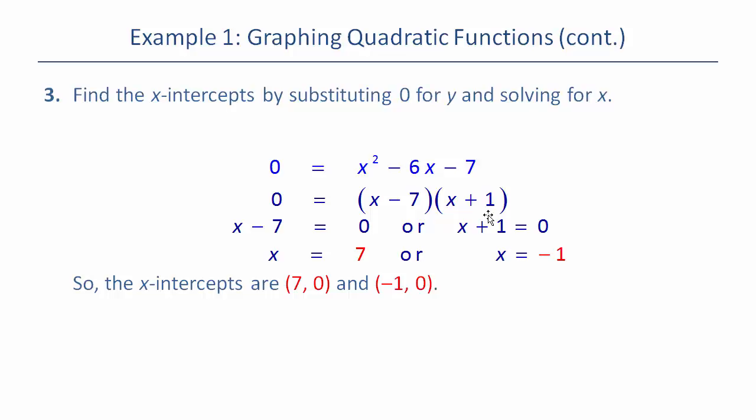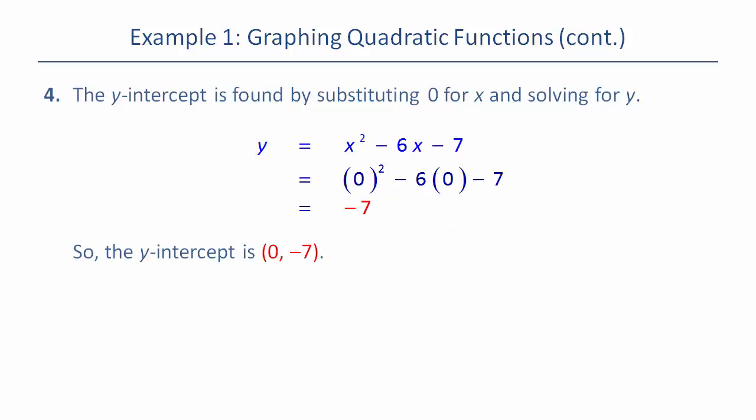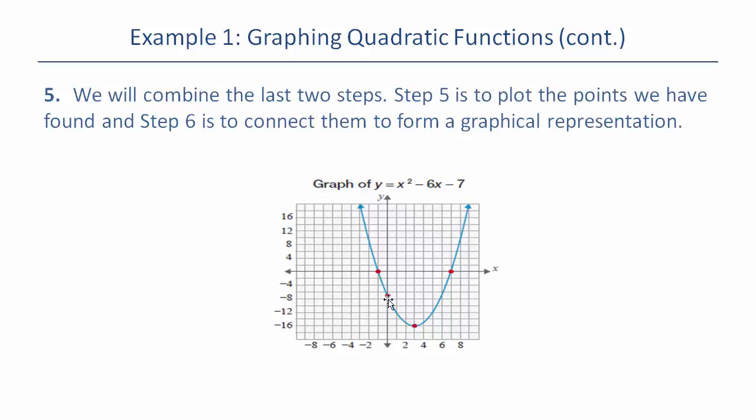So if you don't want to factor it throw it into the quadratic formula, but in either case you get the two x-intercepts are 7 and -1. Then you plug in zero for x and you get that the y-intercept is -7. You plot those dots: the vertex, the y-intercept, the two x-intercepts, and it's just a matter of connecting the dots. There you have it.